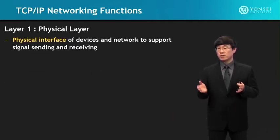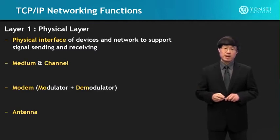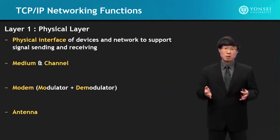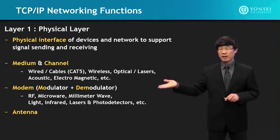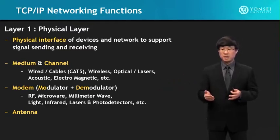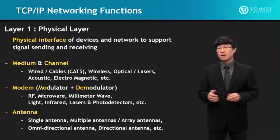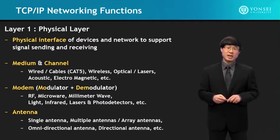At the physical layer, the physical interface of devices and network to support signal sending and receiving are specified. This includes the medium and channel characteristics, the modem (modulator and demodulator), and the antenna. For the medium and channel, this covers wired, wireless, optics, acoustics, and other signals. The modem deals with RF, millimeter, microwave, light, infrared, and other signal types. The antenna can be single, multiple, directional, or omnidirectional.